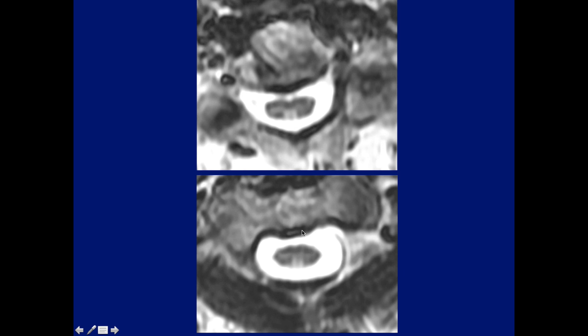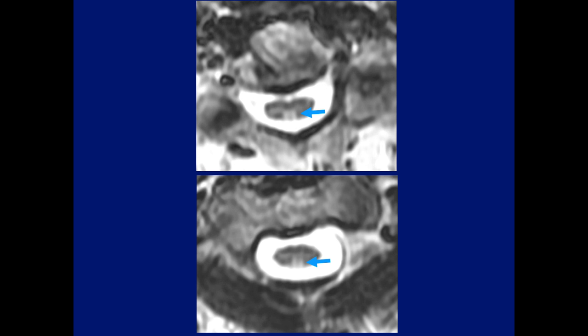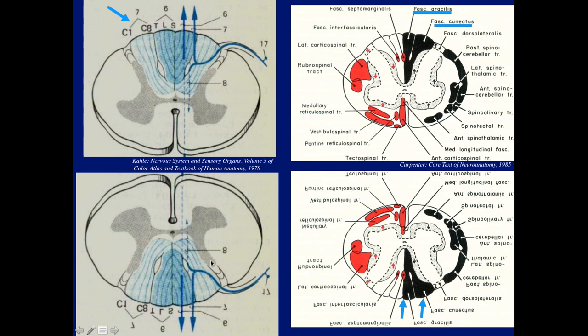Why bother with all this? What are the arrows pointing to? Dan and Stefan both called it correctly. This is the gracile fasciculus — abnormal. Let's go through the anatomy again.